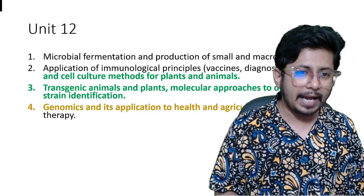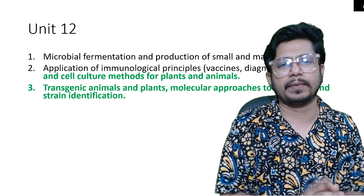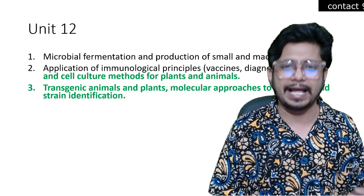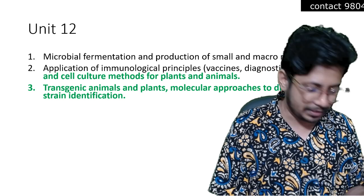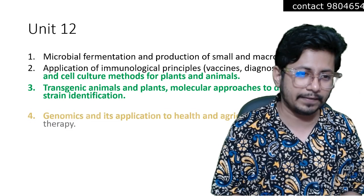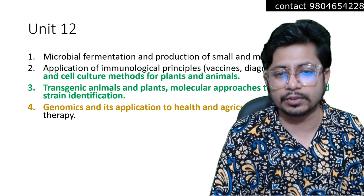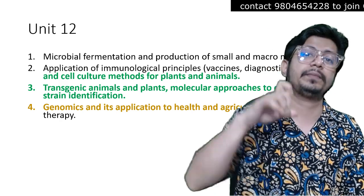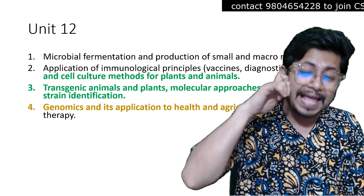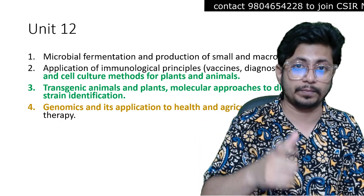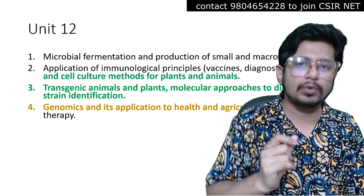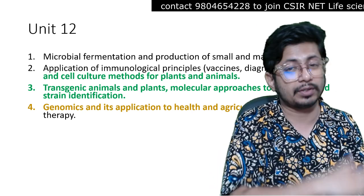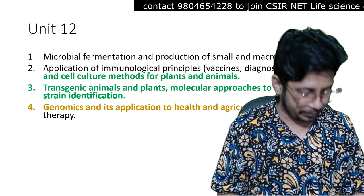For transgenic animals and plants, particularly transgenic plant production, we talk about transformation — Agrobacterium-mediated gene delivery systems, Ti plasmid, and many related things. Genomics and its application to health and agriculture is also involved. The emphasis here is on genomics in terms of agriculture, plant growth, and plant breeding. Unit 12 mostly leans towards the plant side of the story, not the animal side.